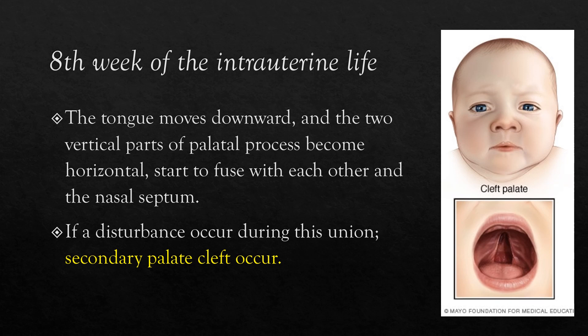At the sixth week after fecundation, the maxillary and mandibular processes join to form the mouth corner. The nasolacrimal duct and lacrimal sac are also formed. If the nasolacrimal furrow does not fuse properly, oblique facial clefts are seen. During the eighth week of intrauterine life, the tissues forming the mandible make rapid progress. As a consequence, the tongue moves downward and the two vertical parts of the palatal process become horizontal, starting to fuse with each other and the nasal septum. If a disturbance occurs during this fusion, secondary palatal cleft occurs.